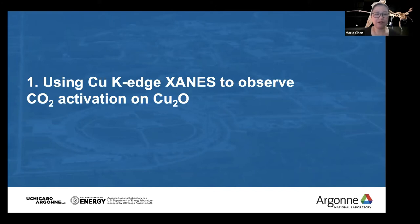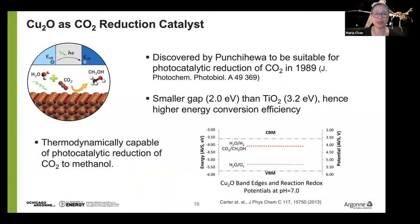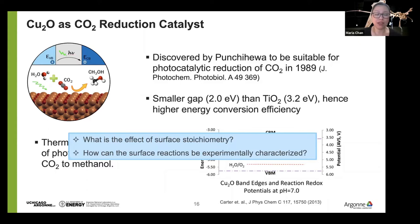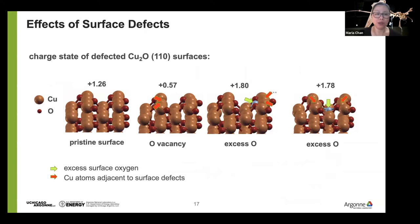Here we have a story about using copper K-edge XANES to observe CO2 activation on Cu2O. This is one of the hardest problems to study in catalysis, because catalysis happens on the surface while XANES is a bulk measurement — so the signal is always going to be very weak. Cu2O is a CO2 reduction catalyst that has gotten a lot of attention for making methanol out of CO2, which is great for carbon sequestration.